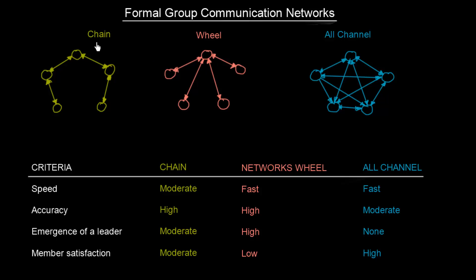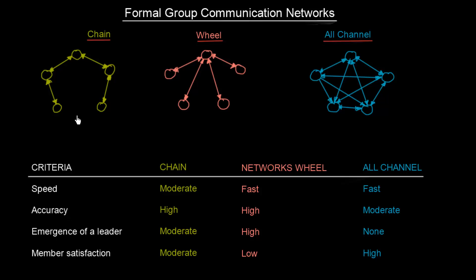So we are going to cover the chain, then the wheel, and finally the all channel communication network. All of these have certain characteristics and criteria, and it will be quite interesting to find out which one would be the most efficient.